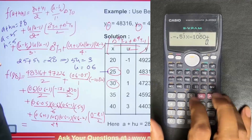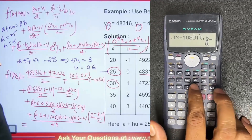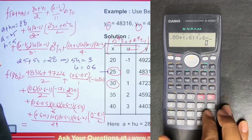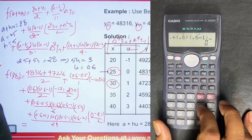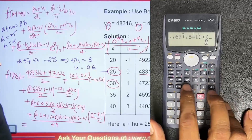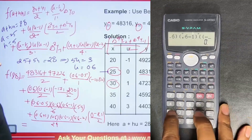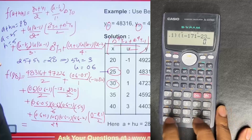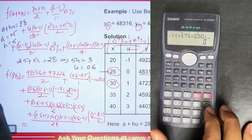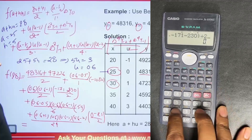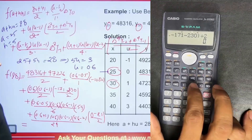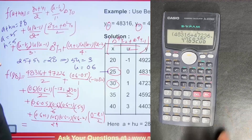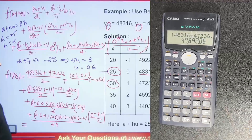Then we get plus: 0.6 times (0.6 minus 1), bracket close, and then inside double brackets we have (minus 171 plus minus 230), bracket close, divided by 2. Then we close the bracket and divide by 2 to get its value.